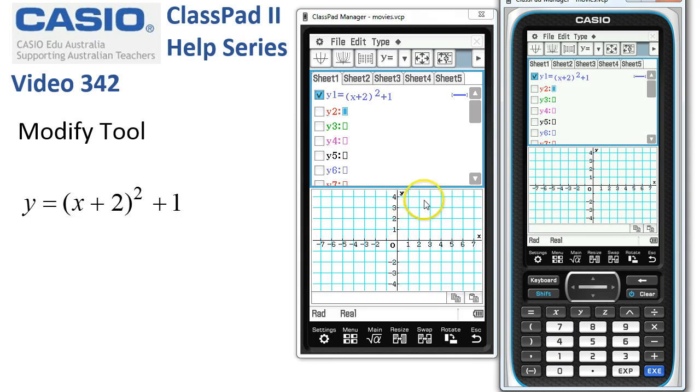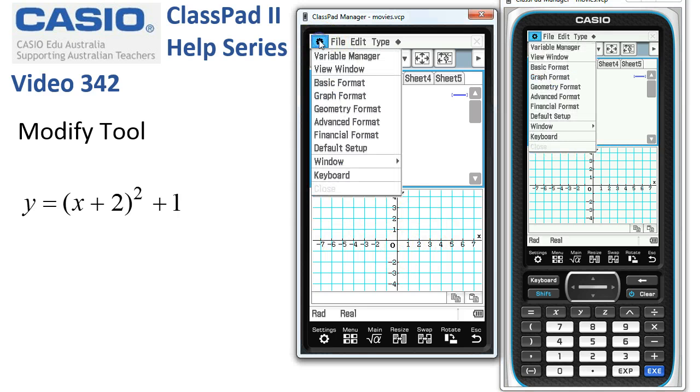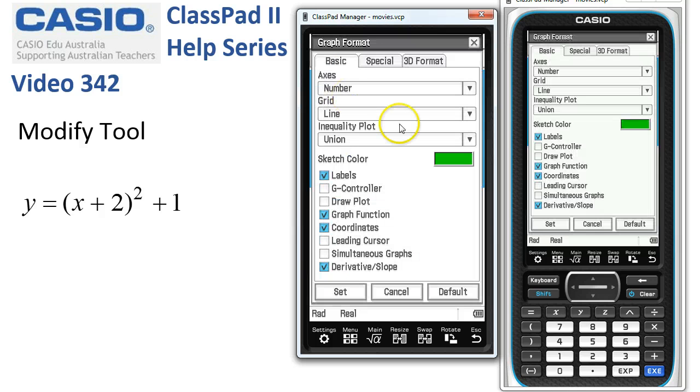I'm looking at the downstairs window. I don't have the on-screen cursor controls, which normally, if you've got them, have arrows displayed at the end of these lines. Before we go any further, we'll tap on settings, graph format, and we'll get rid of the derivative slope and put on the G controller here and tap set.